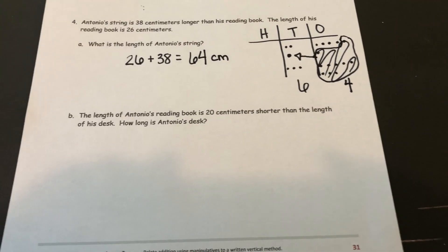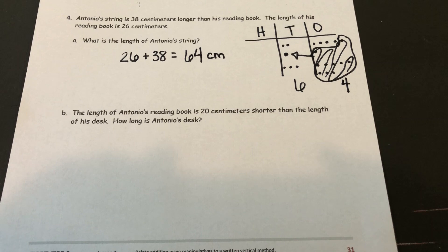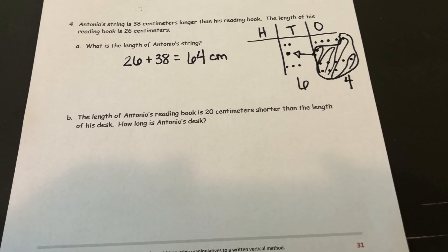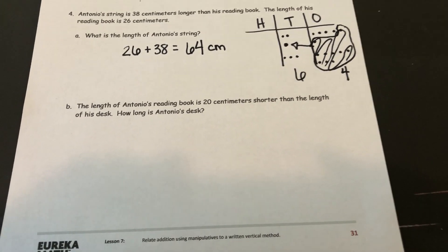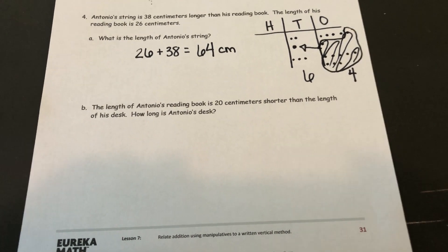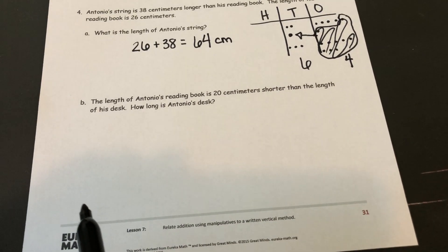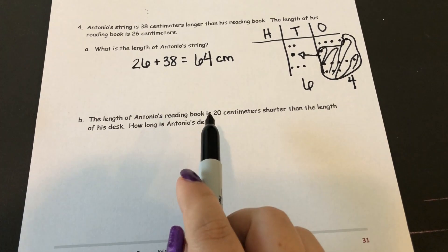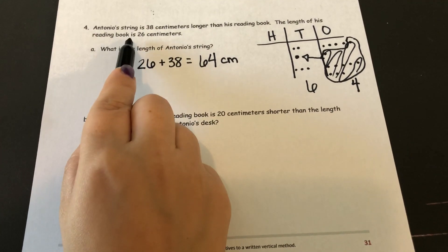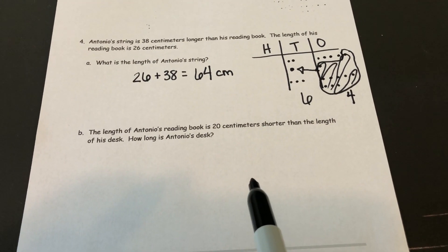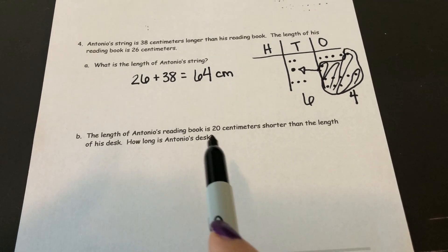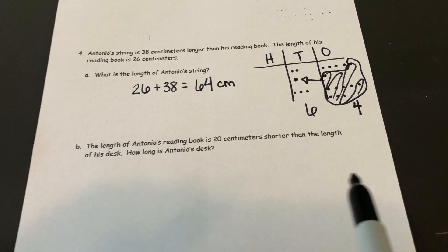Section B says the length of Antonio's reading book is 20 centimeters shorter than the length of his desk. How long is Antonio's desk? His book is 20 centimeters shorter than the desk. So I have to go back up here and find his reading book was 26 centimeters long. And that number, that 26 is 20 centimeters shorter than the desk.